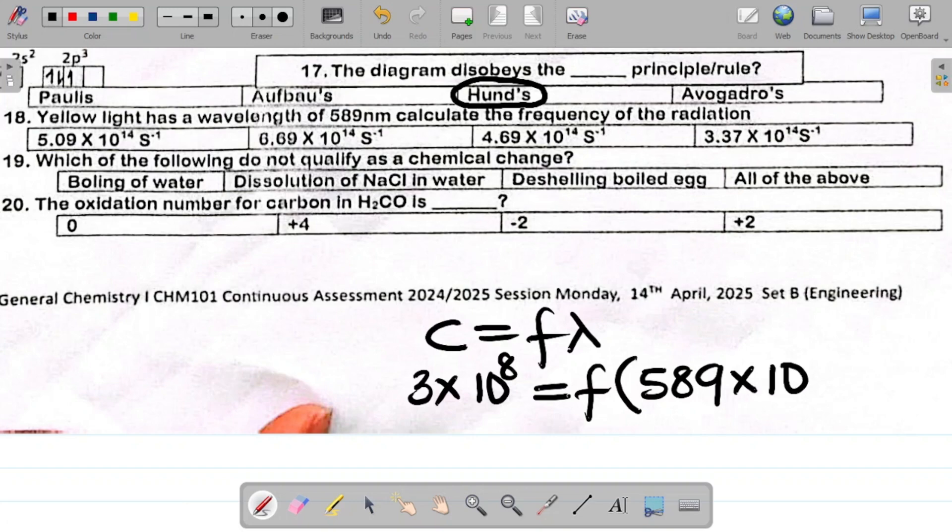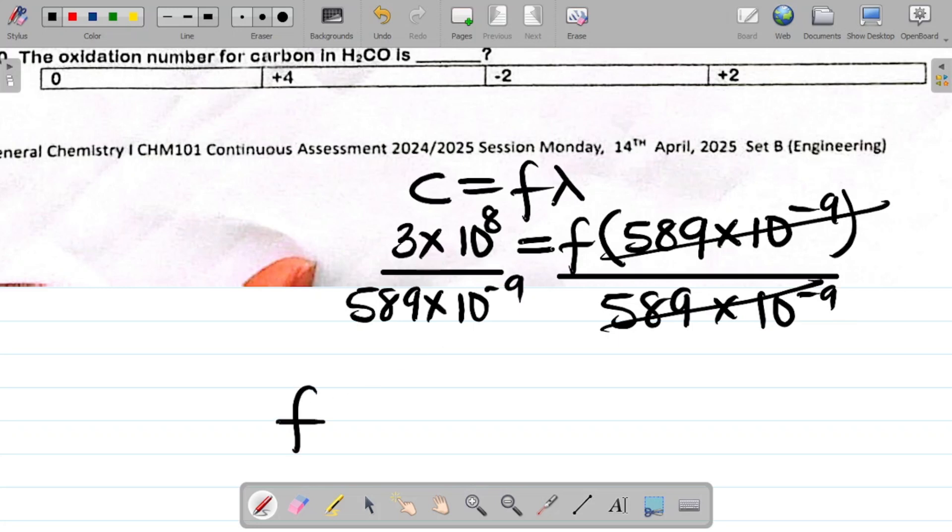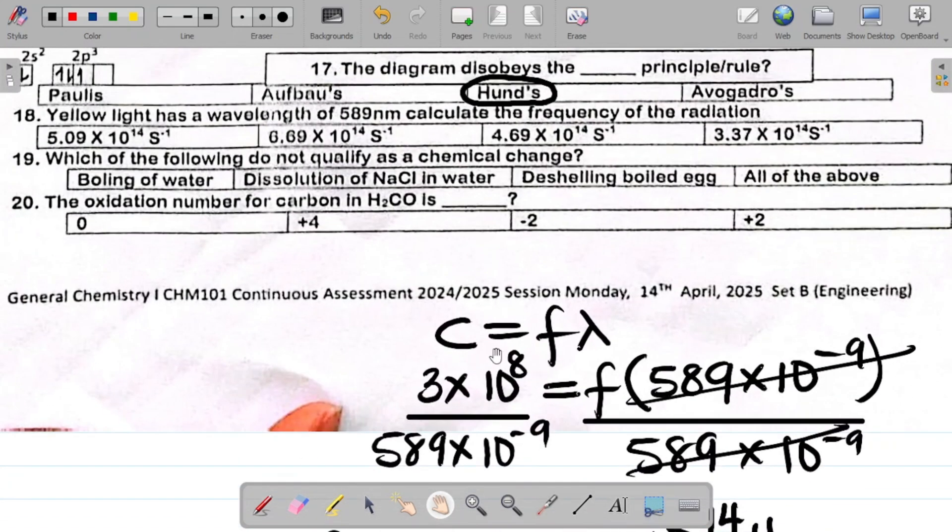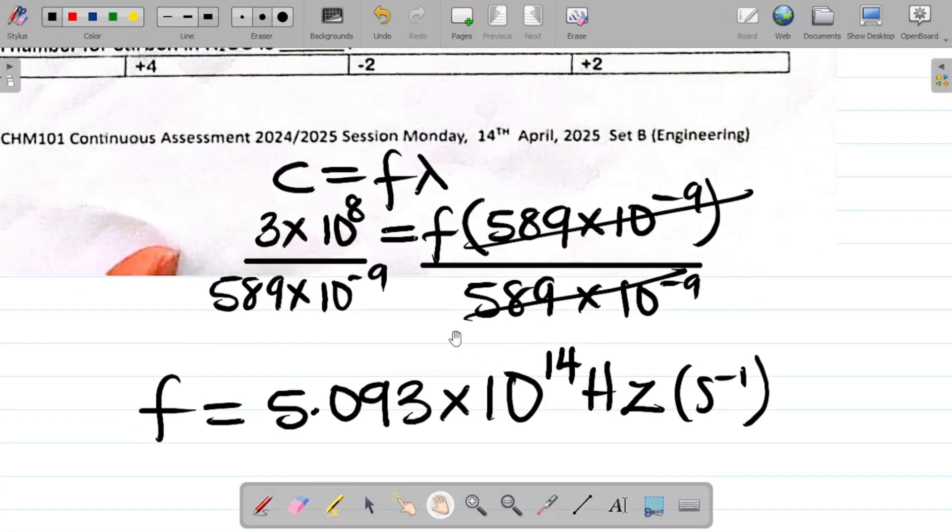So if you have to find the value of frequency, just divide here by 589 times 10 to the power minus 9. So the frequency will be equal to 3 times 10 to the power 8 divided by 589 times 10 to the power minus 9. And if I do that, that's about 5.093 times 10 to the power 14 hertz. Let's see which option is that. 5.09 times 10 to the power 14 hertz or per second. That's the first option here. Either hertz or per second is the same thing. So that's your answer.